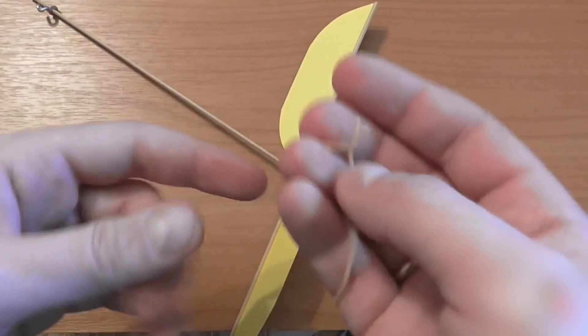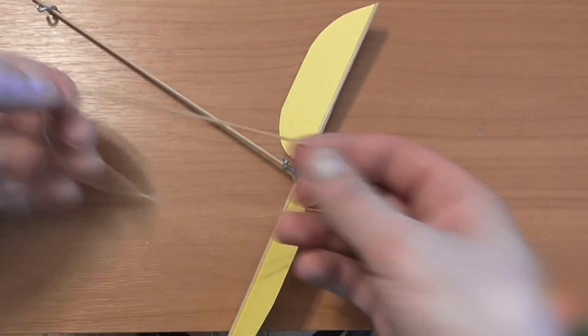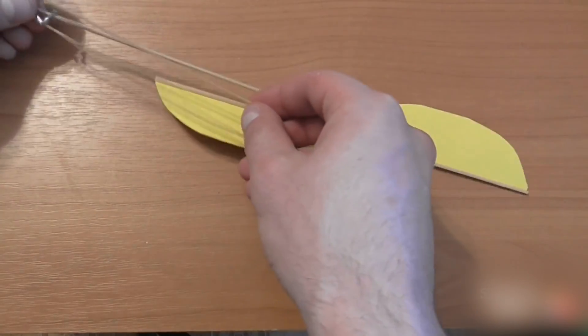Then I take the fishing rubber band line and make a loop with it like this. Now let's test our helicopter.